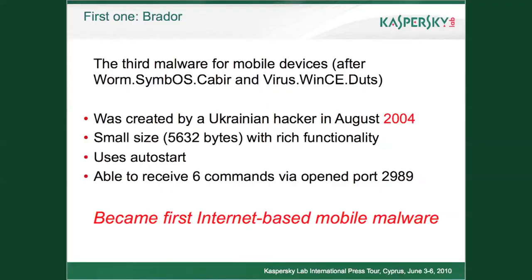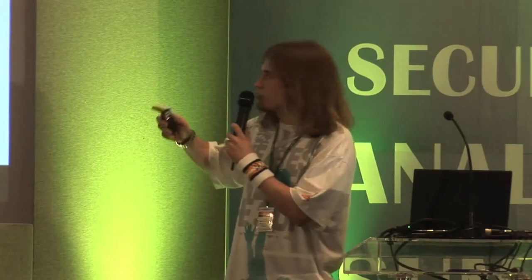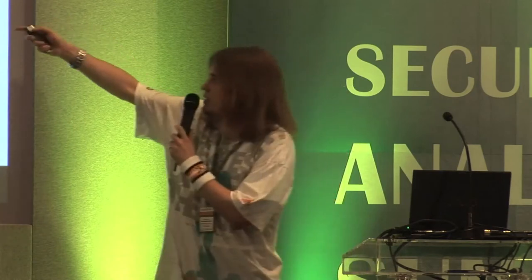But first of all, I would like to start with the history. The third example was Backdoor, named Brador — a very small trojan for Pocket PC. It was created by a Ukrainian hacker in August 2004 with a very small size but rich functionality. After infecting the smartphone, it tried to write itself into the startup folder with the name svchost.exe. Brador became the first example of internetized mobile malware.